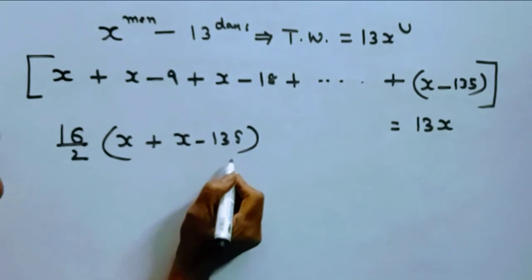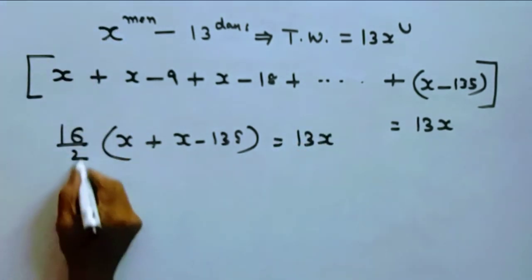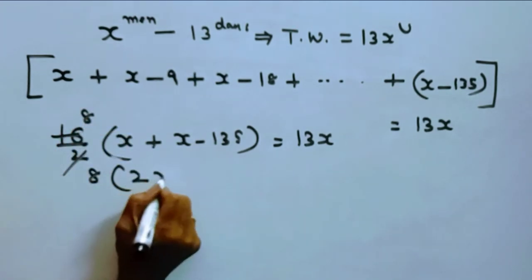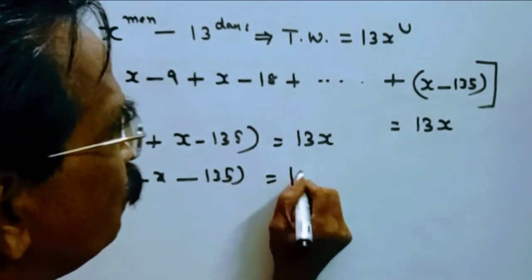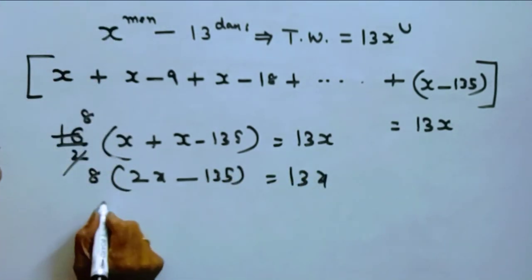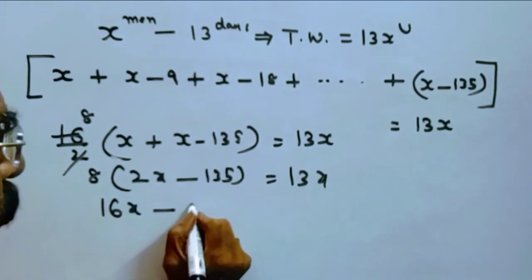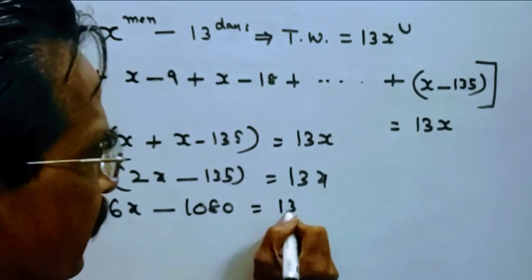This is the total work that is equal to 13X units. So 8 into 2X minus 135 is equal to 13X. See friends, 16X minus 1080 is equal to 13X.